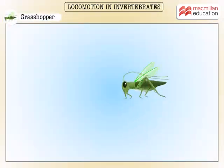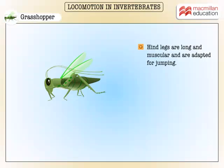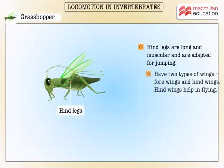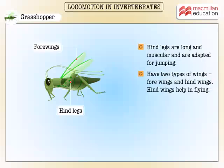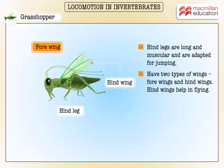Grasshoppers are insects that have long muscular hind legs adapted for jumping. They also have two kinds of wings — forewings and hind wings. The hind wing is used for flight, while the forewing is only used to protect the hind wing.